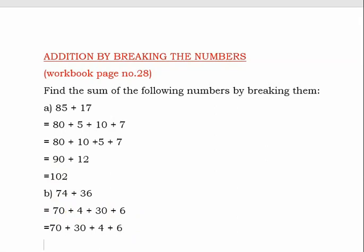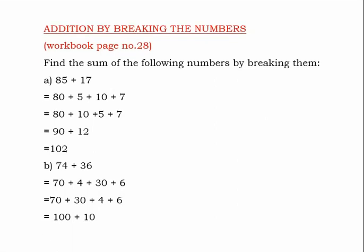Now add: 70 plus 30 — how much is 70 plus 30? 70 plus 30 is 100, and 6 plus 4 is 10. So the answer is 100 plus 10, which is equal to 110.